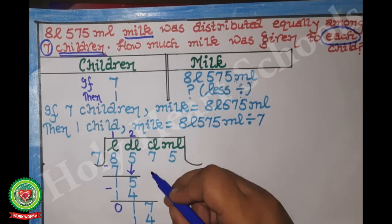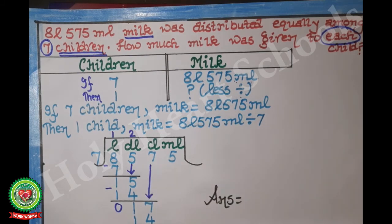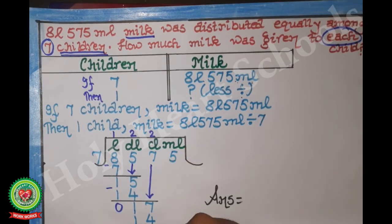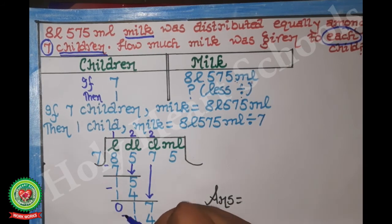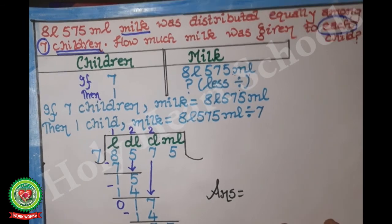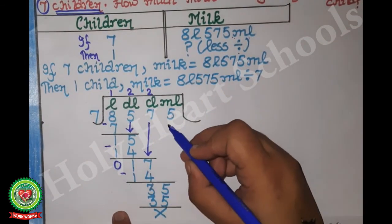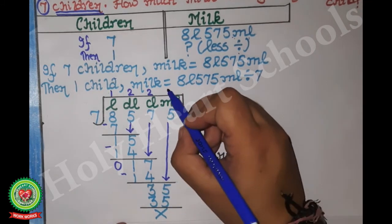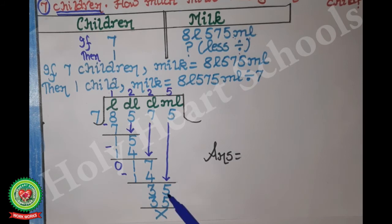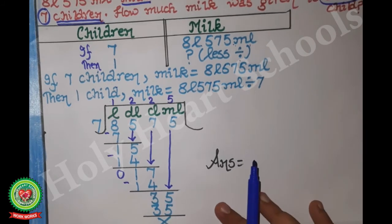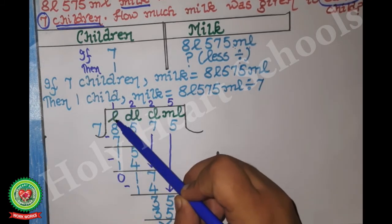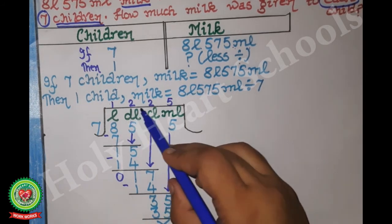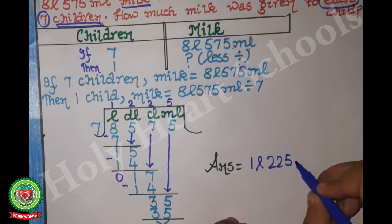Bring 7 down to get 17. On the 7 table, 17 doesn't come; take 14. 7 × 2 = 14. After subtracting, 17 minus 14 = 3. Bring 5 down to get 35. On the 7 table, 35 comes on 5; 7 × 5 = 35. After subtracting we get 0. The answer is 1 liter 225 milliliters.